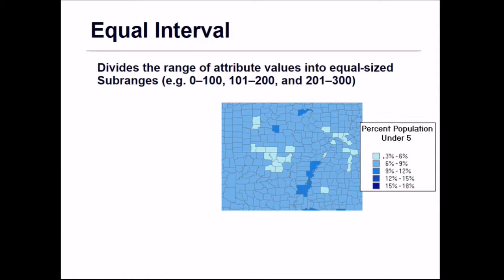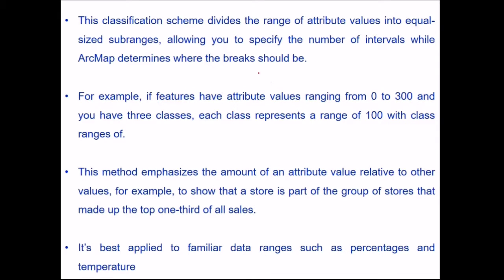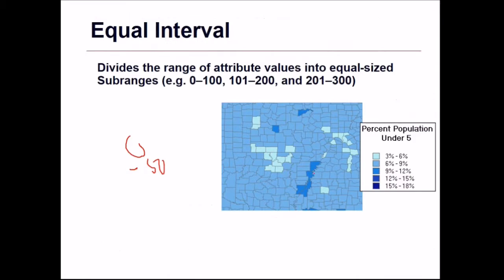Equal intervals means dividing the range of attribute values into equal-sized subranges. For example, if one range is 0 to 50, the next has to be 50 to 100 — not 0 to 50 and 50 to 200. This allows you to specify the number of intervals. For instance, if features have attribute values ranging from 0 to 300 and you have three classes, each class represents 100 units. This method emphasizes the amount of an attribute value relative to others and is best applied to familiar data ranges such as percentages and temperatures.